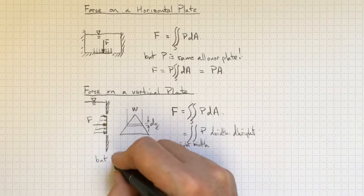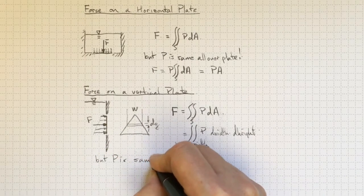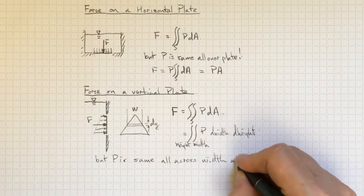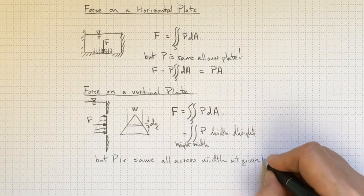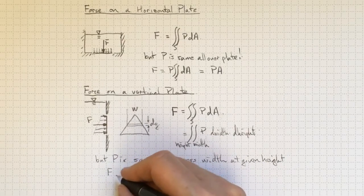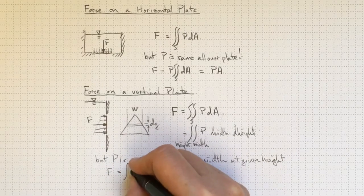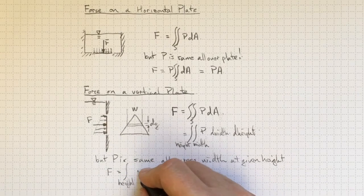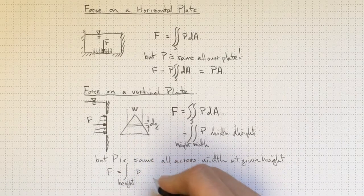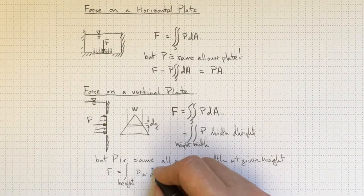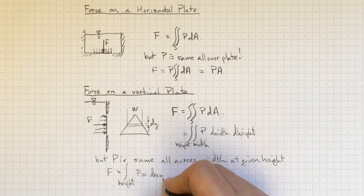And pressure is the same all across the width at a given height. So we can wind up with the force equal to the integral over the height times the pressure times the width at that height times d height.